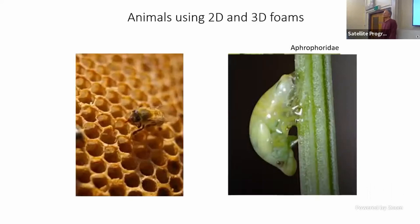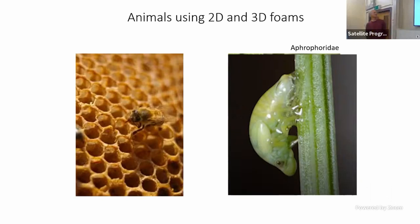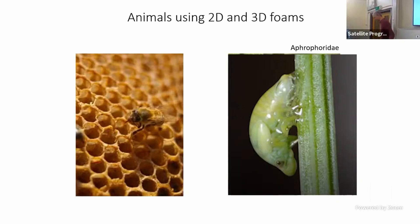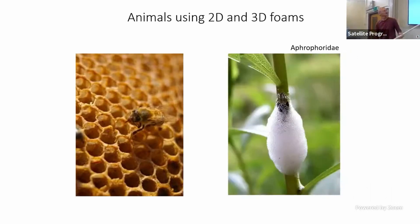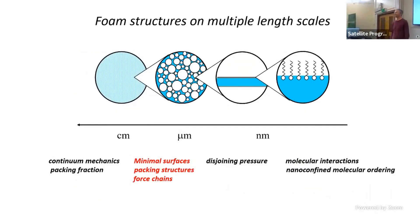It's not just humans who use foam to their advantage — animals do too. Bees are an obvious example, building optimized structures where as little wax as necessary is used. Another example is an insect of the family Afrophoridae, commonly known as the Spittlebug, which produces bubbles and builds a house of bubbles that protects it against insects and has various other biological advantages. Now, from the point of view of physics, packing, and mathematics — foams have structures on many different length scales.